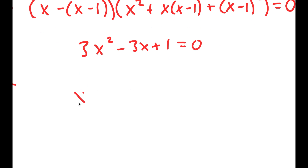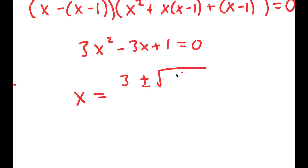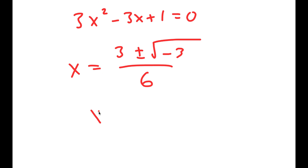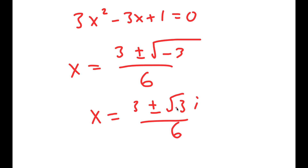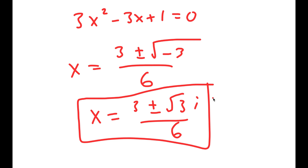Now to solve 3x² minus 3x plus 1 equals 0, I can use the quadratic formula again. I get 3 plus or minus the square root of 9 minus 12, which is negative 3, over 2 times 3, which is 6. So I get x is equal to 3 plus or minus the square root of 3 times i, all over 6. So these are two more solutions to this equation.